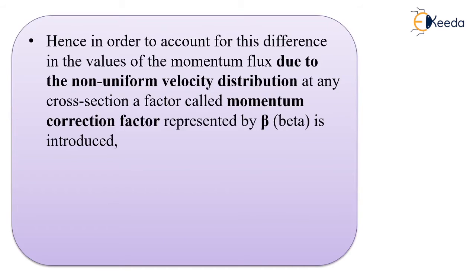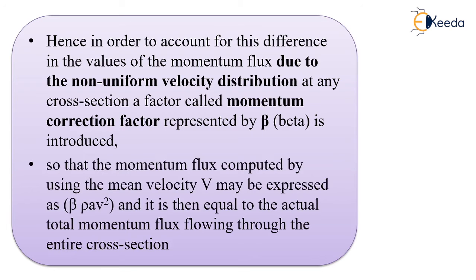Hence, in order to account for this difference in the value of the momentum flux due to non-uniform velocity distribution at any cross-section, a factor is introduced called the momentum correction factor. It is represented by the Greek letter beta (β), so that the momentum flux computed by using the mean velocity V may be expressed as β·ρ·A·V².